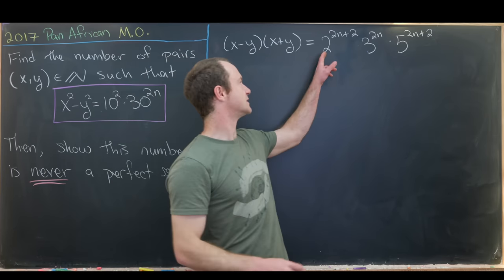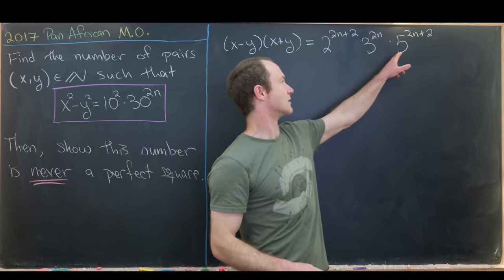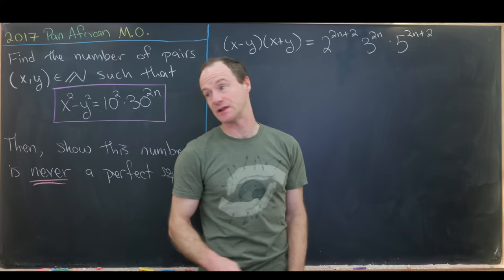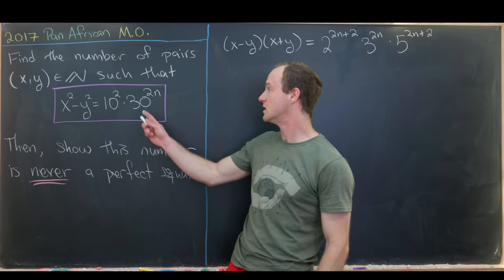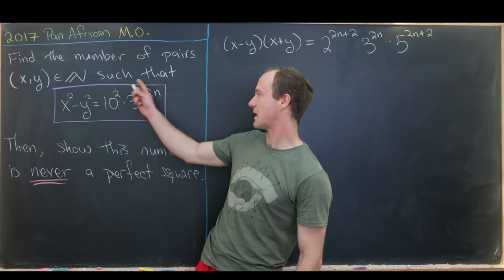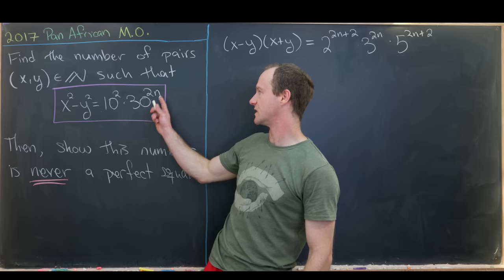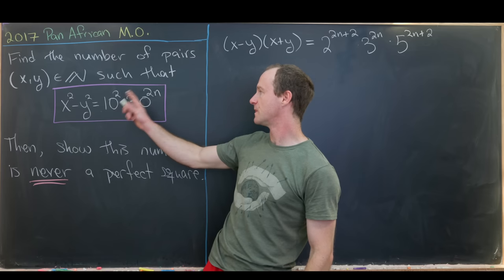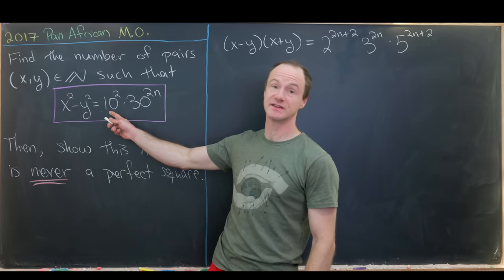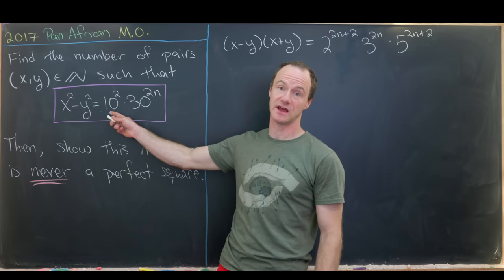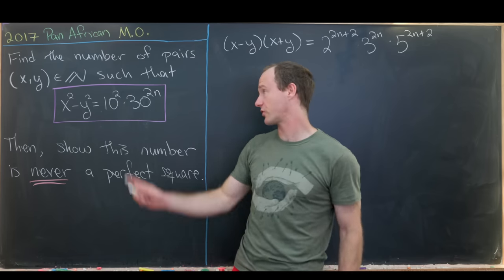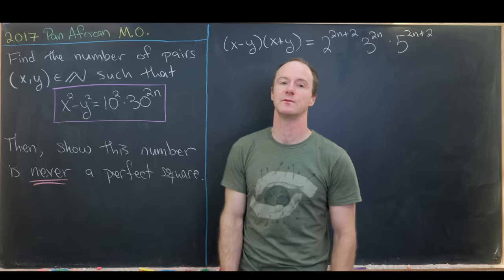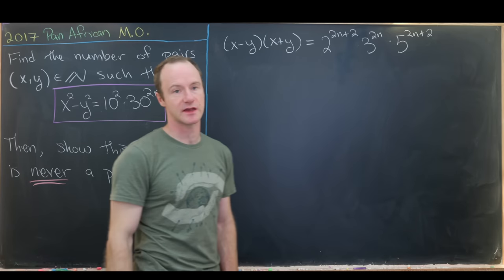That's because we get a power of 10 to the 2n plus 2 from the 10 squared factor and the 30 to the 2n factor, and the remaining 3s come from the 30.